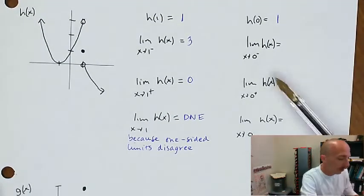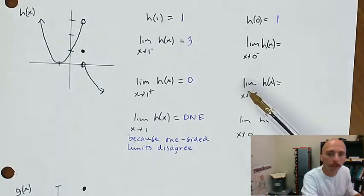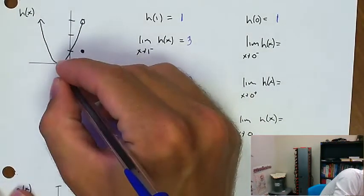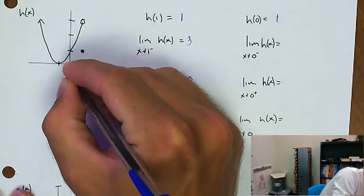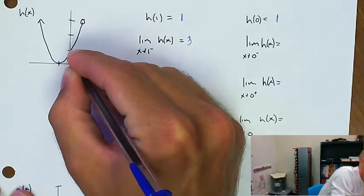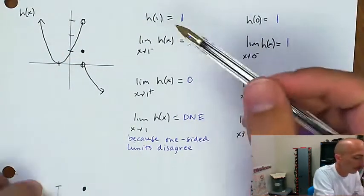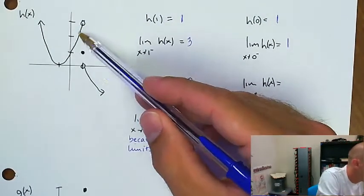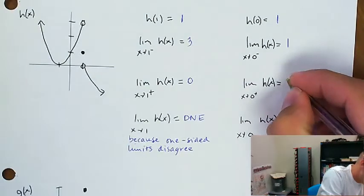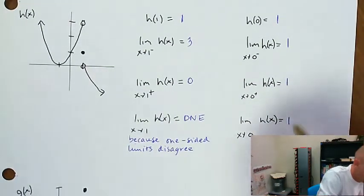Now they're going to ask the same questions about the graph of h as x approaches 0. As x approaches 0 from the negative side, the y value is getting closer and closer to 1. The same thing as x approaches 0 from the positive side, which means that the limit of h as x approaches 0 is 1.